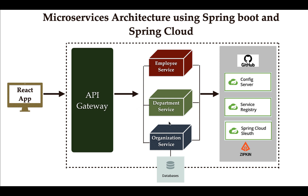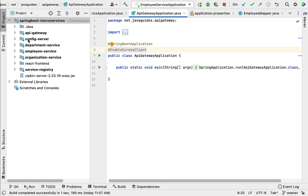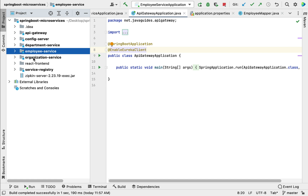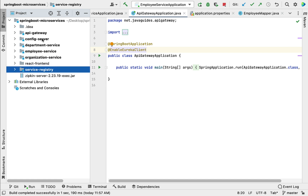Apart from these microservices, we are going to create a simple React application and integrate it with the backend microservices. You will learn how to create a React application as a microservice and how to call a REST API from the React application to the API gateway. Looking at the source code, we will create services including API gateway, config server, department service, employee service, organization service, React frontend microservice, and service registry.